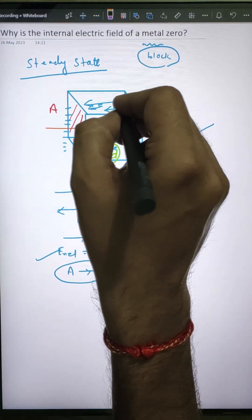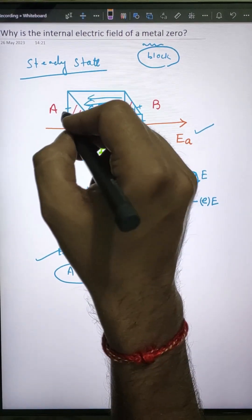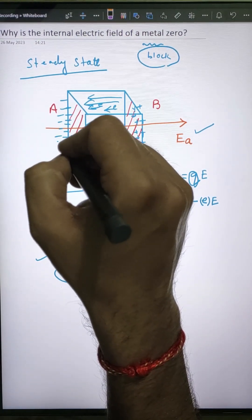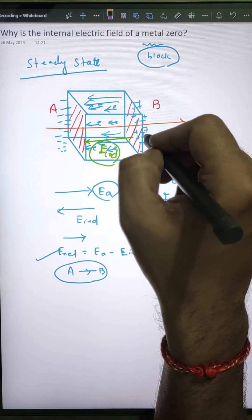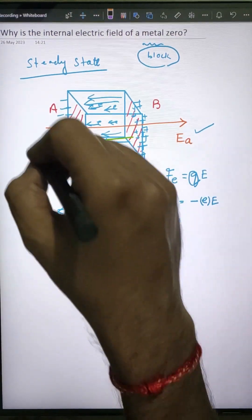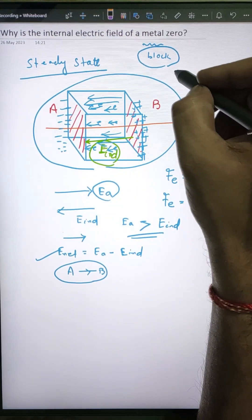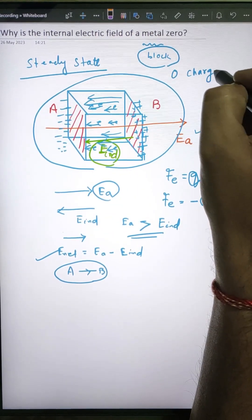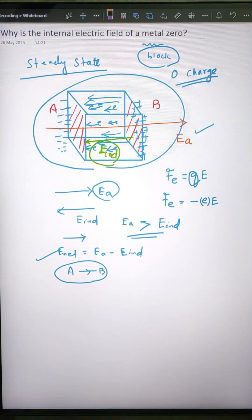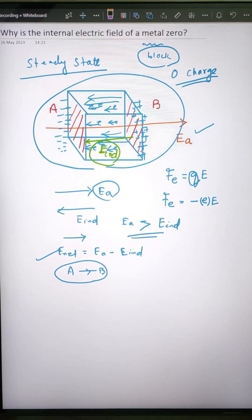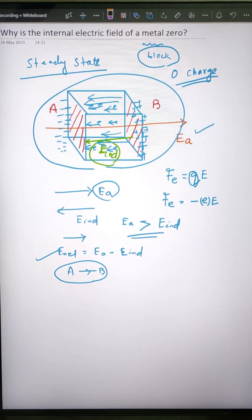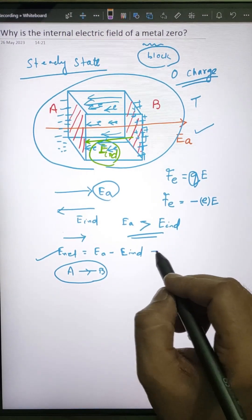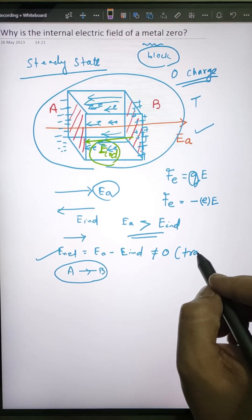Under the influence of this decreasing net electric field, more and more positive charge will keep building up on face B. The block overall will remain electrically neutral, but on face A there will be negative charge building and on face B there will be positive charge building. This is the transient state — as long as E_net is not equal to zero, you will have a transient state.